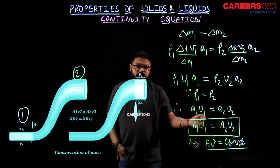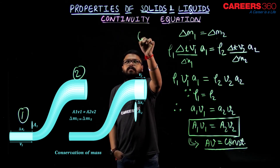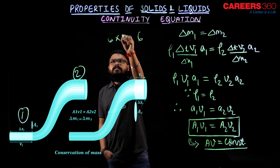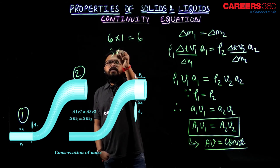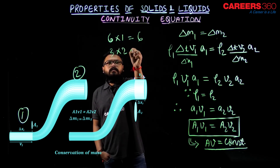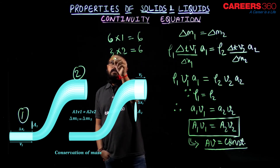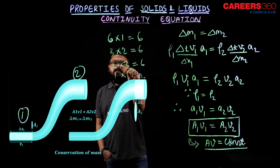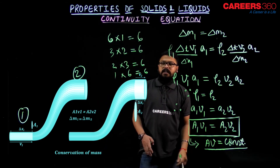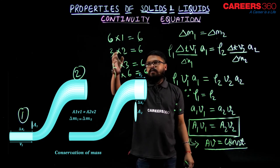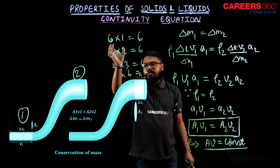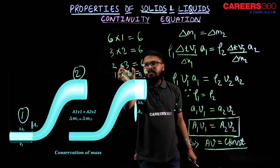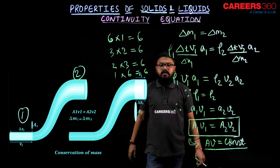For example, if the product constant is 6, I can write 6 as 6 times 1, or 3 times 2, or 2 times 3, or 1 times 6. As the area of cross section goes on decreasing, the velocity goes on increasing, and if the area of cross section goes on increasing, then the velocity must go on decreasing — because the product must remain constant.